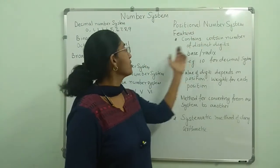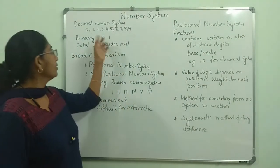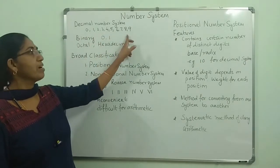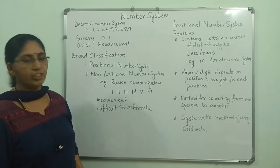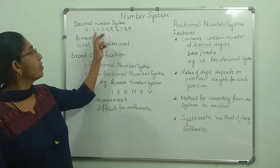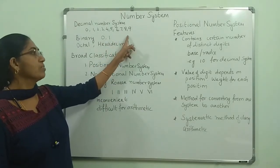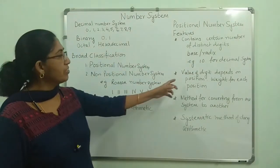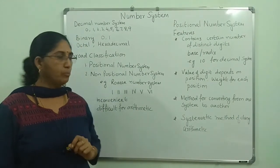Some of the features of positional number systems: it should contain a certain number of distinct digits. For example, in the decimal number system there are 10 numbers, which constitute the whole digital number system, and its base is 10. A positional number system has a fixed number of distinct digits and a particular base — 10 for decimal. The next feature is that the value of the digit depends upon its position, meaning there is a weight for each position.